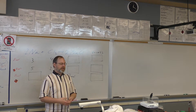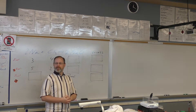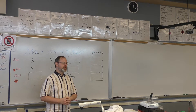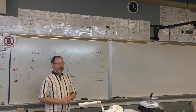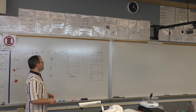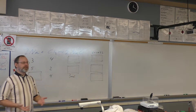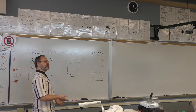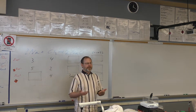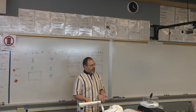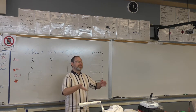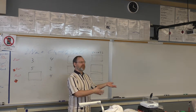Like go to Krispy Kreme and say 'I'd like two-thirds of a donut' — they're going to charge you for the full donut. But you can buy half a dozen donuts. So we're going to do the same thing, and we're going to go through some exercises to figure out what is a limiting reactant, and once we know what the limiting reactant is, how much of the excess is left over.